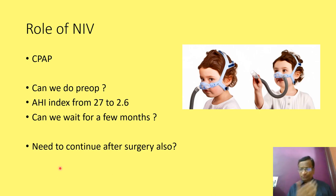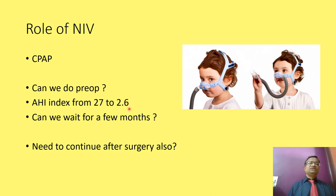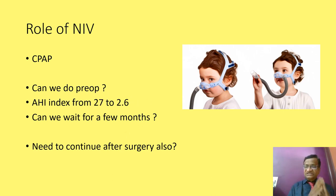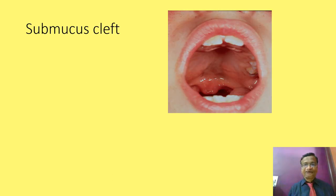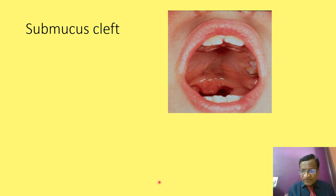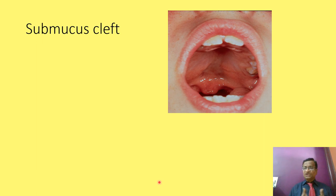One option is to wait a few months with NIV to bring the OSA severity down — reducing AHI from 27 to 2.6 — so that perioperative risk comes down to normal. A very important pre-operative concern specific to tonsillectomy is the submucous cleft palate. I am not discussing routine pre-operative assessment such as IV access or previous surgical history — those remain standard.